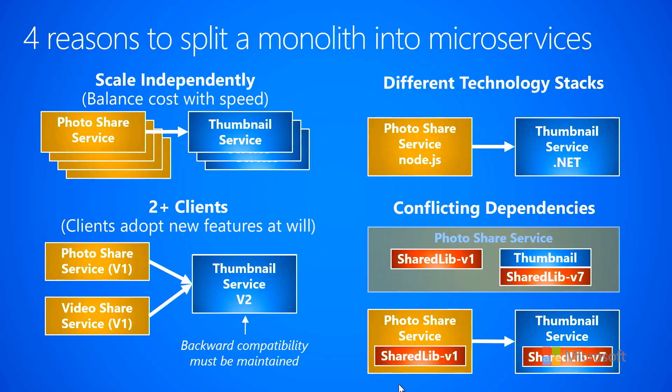The point is that it's not as simple as turning a method call into a network call — there's a lot of complexity introduced. But there are good reasons to do this: the four reasons to split a monolith into microservices are independent scaling, different technology stacks, two or more clients, and conflicting dependencies. You want one or more of these to justify making a method call into a network call. Hopefully this gives you a good sense of the trade-offs.